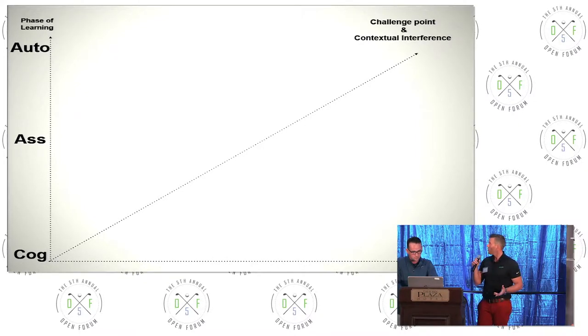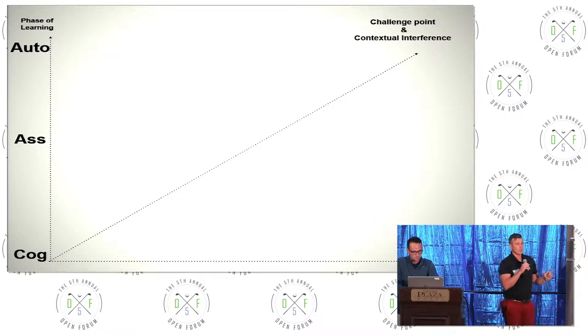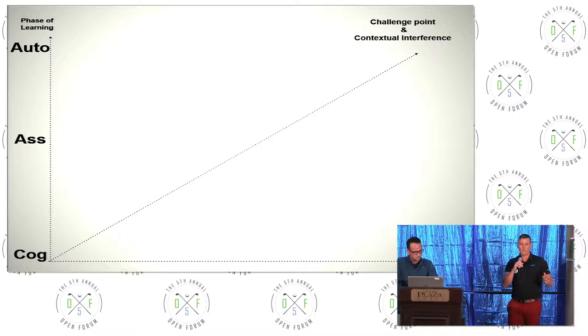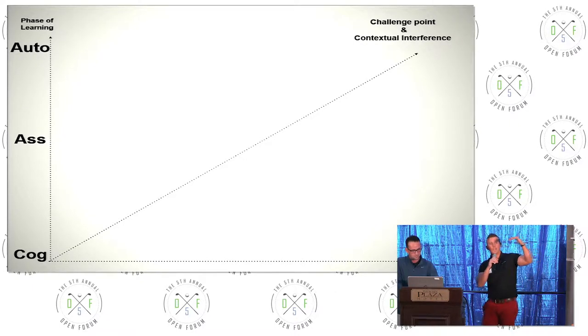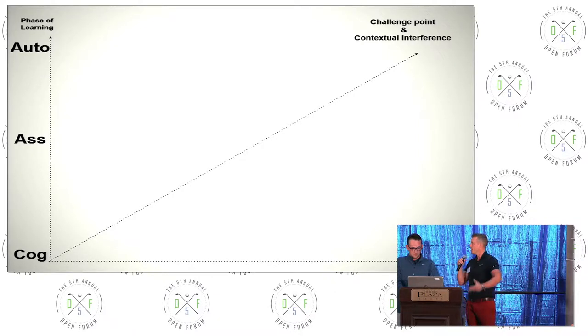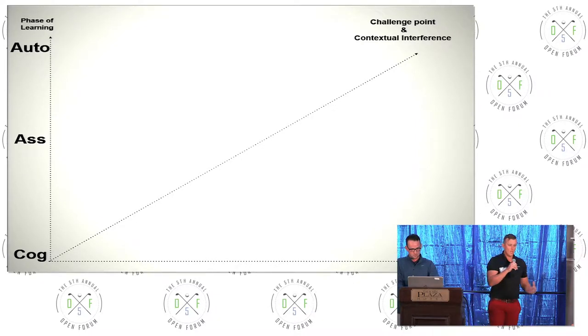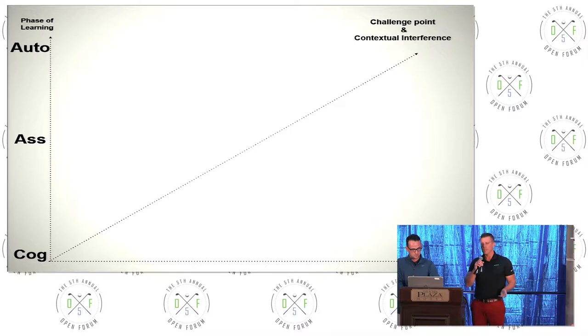And then you can see the words challenge point and contextual interference. There's a great paper out there called the Challenge Point Framework, and that really helps you understand at what level of challenge you should be setting players to keep them learning. And then contextual interference is taken from a lot of the research done on dynamic systems theory.